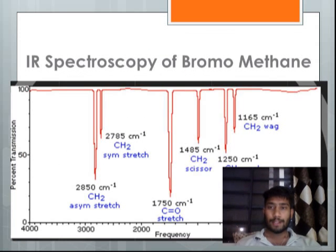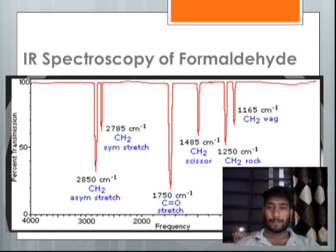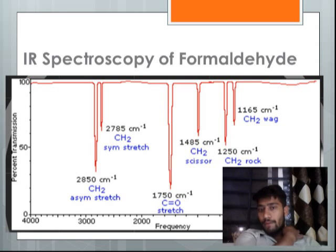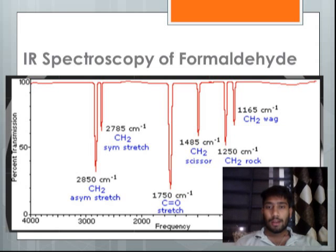This is the IR spectroscopy graph of bromomethane, and this is the IR spectroscopy graph of formaldehyde. By these we can see that every atom and every compound has a different and unique IR spectroscopy graph, by which we can find out which atom or molecule is present.